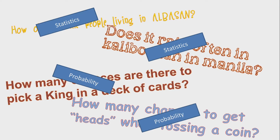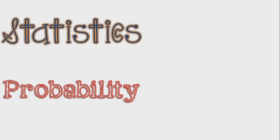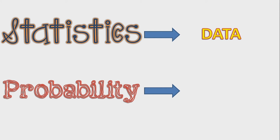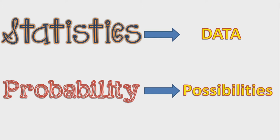If the question is more about chances or possibilities, it can be answered using probability. But if a question requires data, it can be answered using statistics. So again: statistics requires data, and probability deals more on possibilities or chances. In this lesson we will take a closer look at statistics.